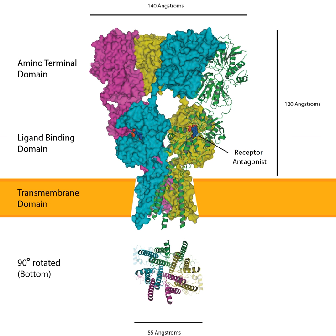Role in Seizures. AMPA receptors play a key role in the generation and spread of epileptic seizures. Kainic acid, a convulsant that is widely used in epilepsy research, induces seizures in part via activation of AMPA receptors.